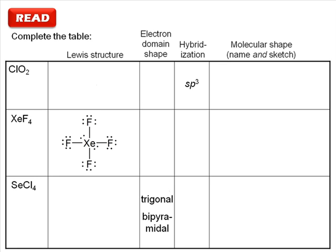Reading this question is straightforward. It simply says complete the table. We are given three molecules and ask for their Lewis structure, electron domain shape, hybridization, and molecular shape.